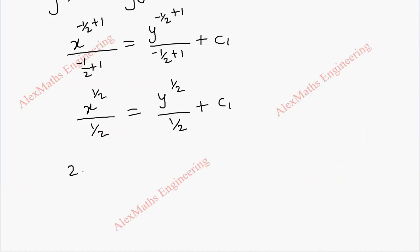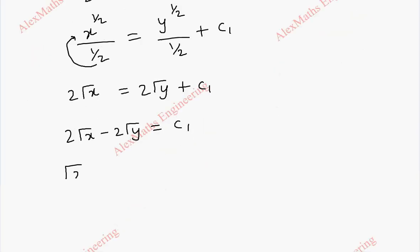This can be rewritten as 2 root x. This 2 we can carry here. X power half is root x. And this is 2 root y plus c1. So 2 root x minus 2 root y equal to c1. By taking two common, we get root x minus root y into 2. And this 2 can be taken to the other side as c1 by 2.